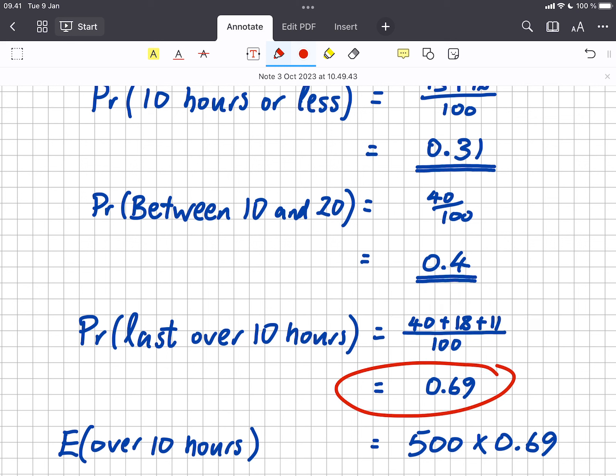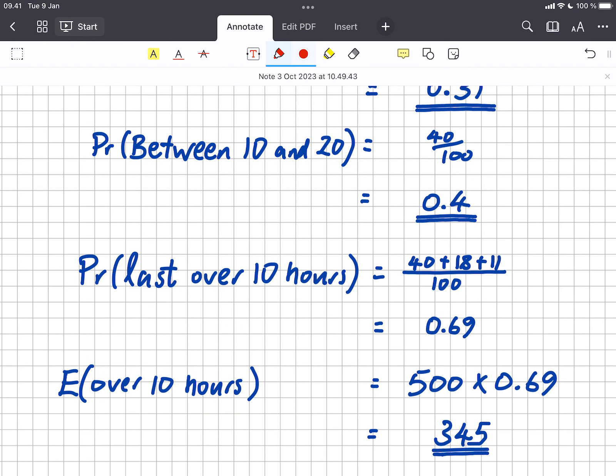So our experimental probability of these lasting over 10 hours is 0.69, and then we've got 500 of them. So out of the 500, if each of them has a 0.69 probability of lasting over 10 hours, then the number that we expect to last over 10 hours, and we can use this notation E brackets over 10 hours, so the expectation of the number lasting over 10 hours is 500 times 0.69, and that comes to 345. So we would expect 345 of them to last for over 10 hours.